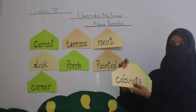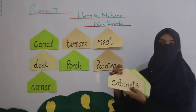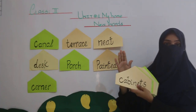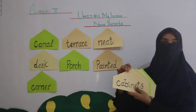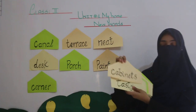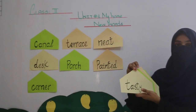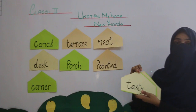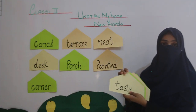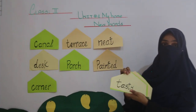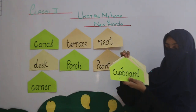Another word is Cabinets. Aap sabko pata hai Cabinets hote hain — kitchen mein different sections mein different cheez ke liye hote hain. Tasty, T-A-S-T-Y. Aap sab ke ghar mein mama khaana pakaati hain na — khaana kaisa hota hai? Tasty! Mazhedaar.